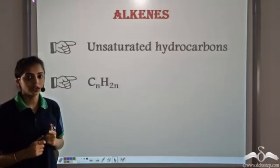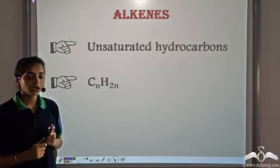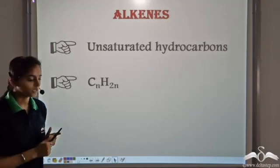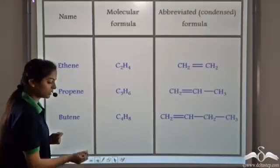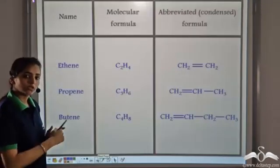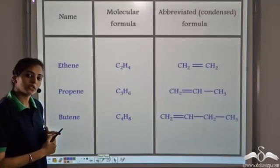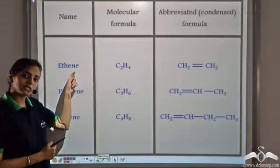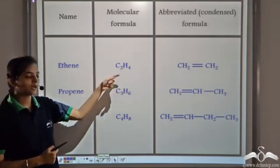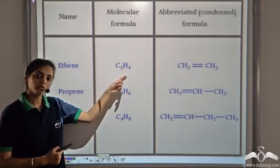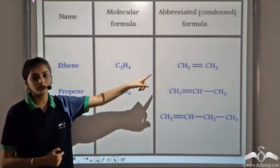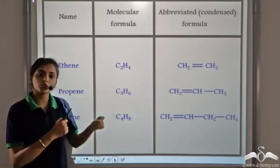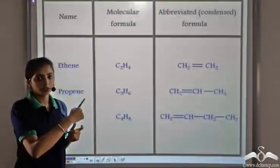Alkenes are unsaturated hydrocarbons having the general formula CnH2n. Using this general formula, the first member of the alkene series is ethene, having the molecular formula C2H4. The condensed or abbreviated formula is CH2 double-bonded to another CH2.